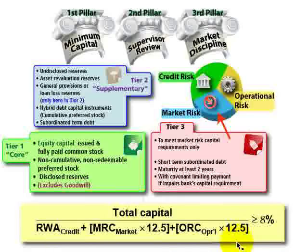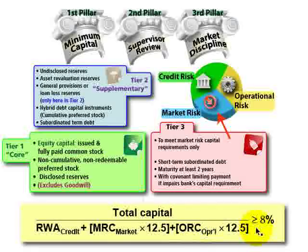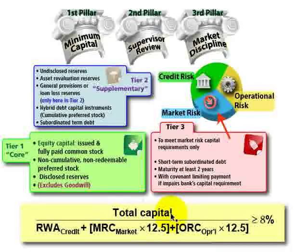There are some nuances at the margin, but it's total eligible capital — the regulatory capital — divided by the risk-weighted assets, which now includes credit, market, and operational risk. That ratio needs to be at least 8%. The numerator has largely been unchanged over the years; this is total eligible regulatory capital.